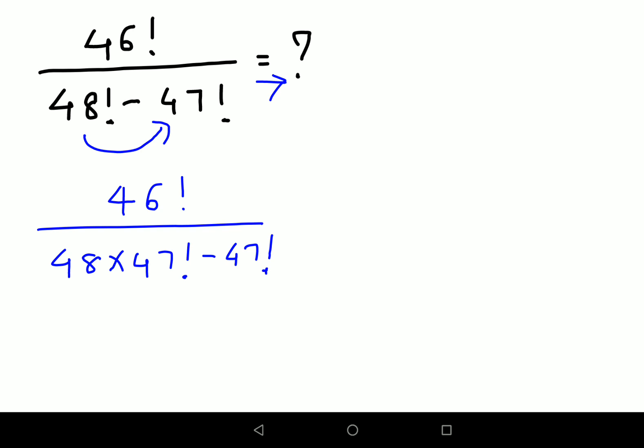Out of these two I can take 47 factorial common. So 47 factorial is taken common and I'm left with 48 minus 1. The numerator remains as it is.